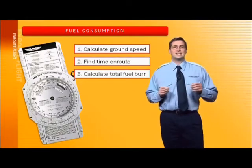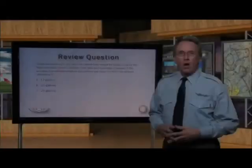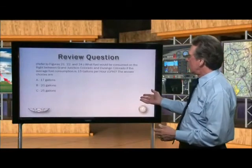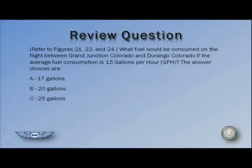All right, back into the studio for a question on our final topic. We're going to ask you to refer to figures 21, 22, and 24, which the FAA will provide. What fuel would be consumed on the flight between Grand Junction, Colorado, and Durango, Colorado, if the average fuel consumption is 15 gallons per hour, or GPH?